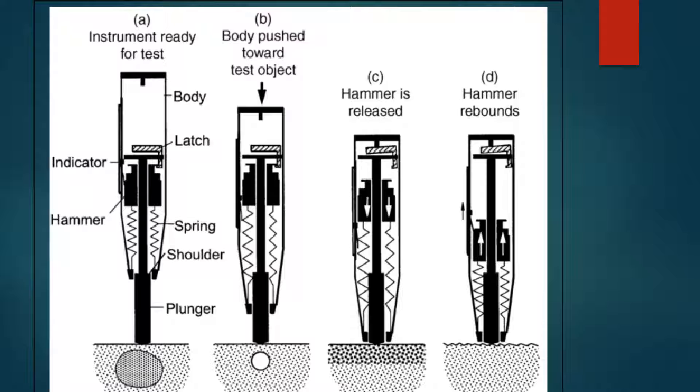The plunger of the rebound hammer is pressed against a concrete surface. The hammer mass will be pushed back and secured to a pin. The impact spring is attached to the hammer mass, so it will be extended with the hammer mass.